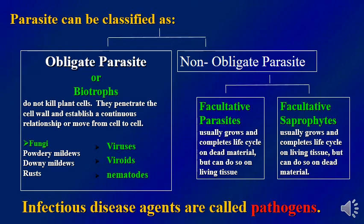On the other hand, we have non-obligate parasites, which are classified into two groups: facultative parasites and facultative saprophytes. Facultative parasites usually grow and complete their life cycle on dead material but can sometimes do so on living tissue. Facultative saprophytes usually grow and complete their life cycle on living tissue but under some conditions can do so on dead materials.